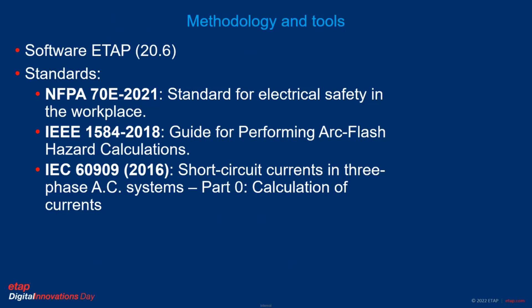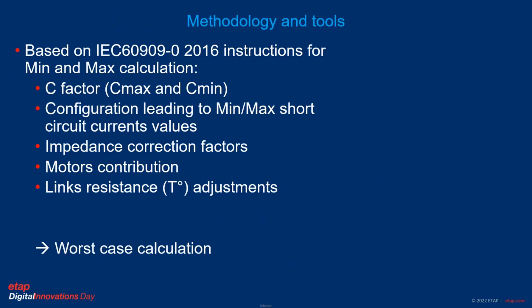Customers need to refer to the IEC 60909 short circuit calculation for the bolted fault. Based on this standard, instructions for minimum and maximum calculation are to consider a C factor depending on min or max values, and a configuration leading to minimum or maximum short circuit values. This is highly important to highlight: it is important to proceed with both maximum and minimum short circuit current calculations, because you can get high arc flash values on minimum short circuit current since the tripping time is much higher.